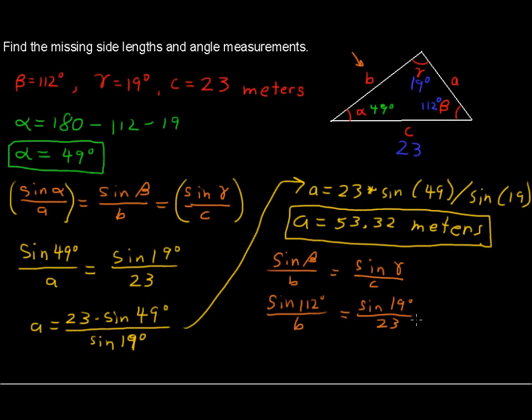Multiply each side by B, and then multiply by 23, and then divide by sine of 19, and you'll get B equals 23, multiplied by sine of 112 degrees divided by, I'm going to write this so I don't run out of space, divided by sine of 19 degrees.